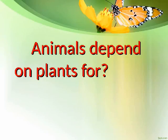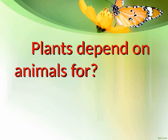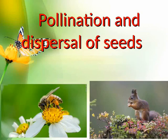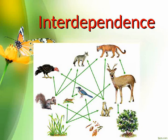Animals depend on plants for? Food and shelter. Plants depend on animals for? Pollination and dispersal of seeds. Plants and animals depend on each other — this is called? Interdependence.